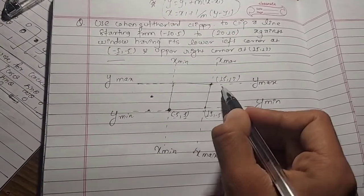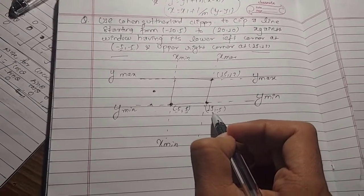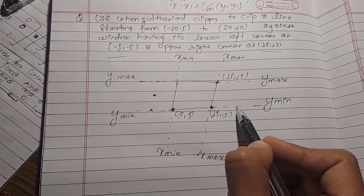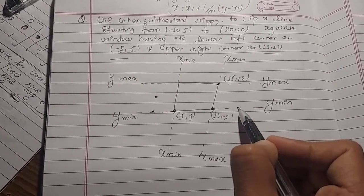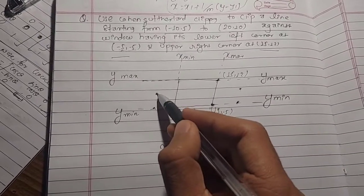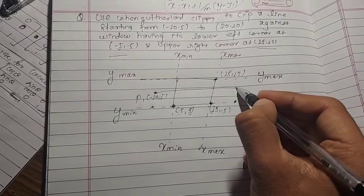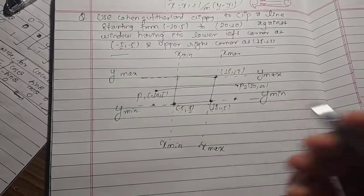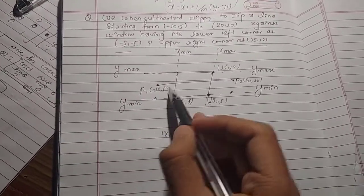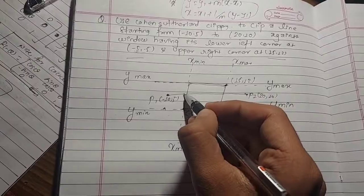We check the sample points against xmin equals minus 5, ymin equals minus 5. We verify each endpoint's position. The line goes from minus 10 comma 5 to 20 comma 10. We use the clipping window coordinates and check for intersection. We assign region codes to each endpoint and check inside, outside, or intersection conditions.